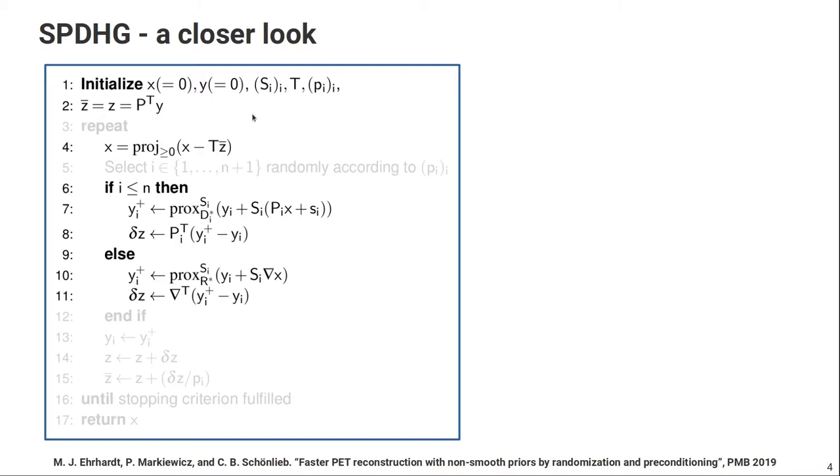And then in every update we pick a random number according to our probabilities, and then we either do an update according to a subset of our emission data. So this is shown here. And the update involves calculating the forward projection with respect to that subset and multiplying with the step size, and then evaluating the proximal operator of the convex dual of the Poisson log-likelihood. And then we have to do a back projection with the difference between the update and the original value.